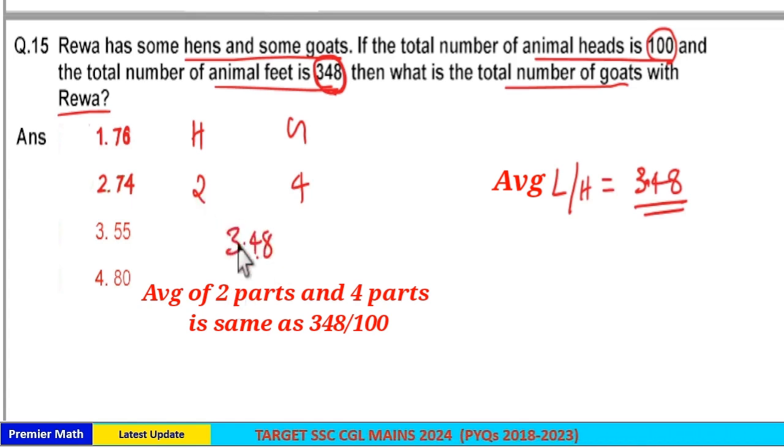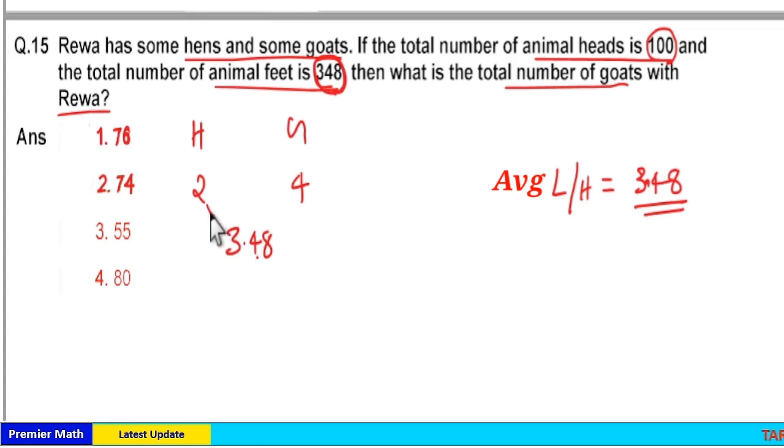Now take the difference between 3.48 and 2, which is equal to 1.48. And here the difference between 4 and 3.48 is equal to 0.52.